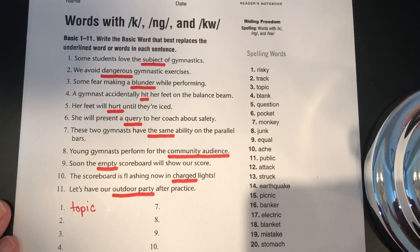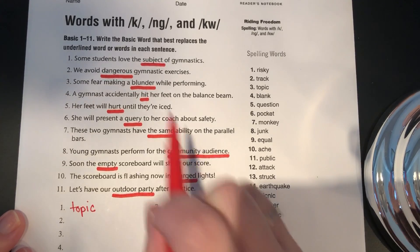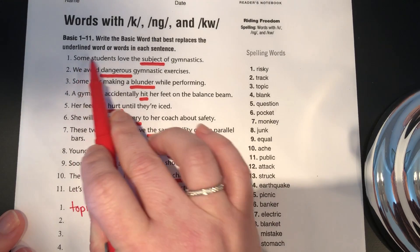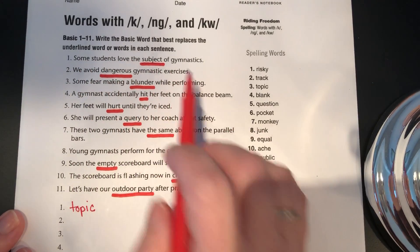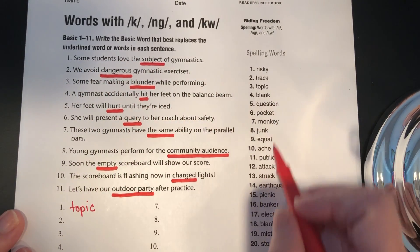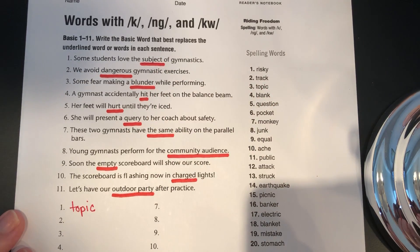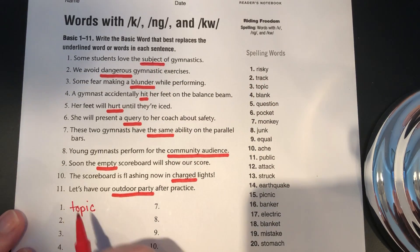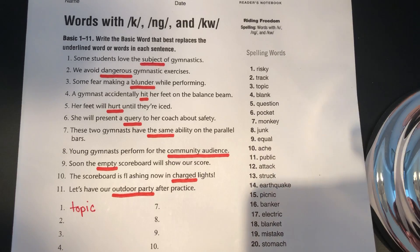Now once you have all of the underlined words, you need to read the sentence to figure out which spelling word can replace the underlined word. So, some students love the subject of gymnastics — topic would be the word that could replace subject. So you would write that on the line for number one.